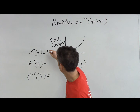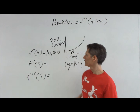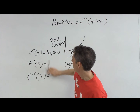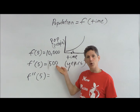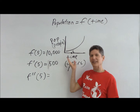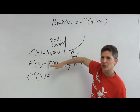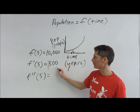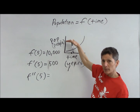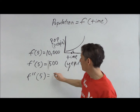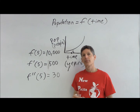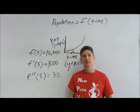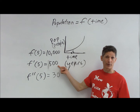At year five, the population of our town is 10,000 people. Clearly I have a positive slope, so the first derivative must be some positive value — let's say 500. So at year five, my population is growing at a rate of 500 people per year. The second derivative would also have to be positive, because that original function is concave up. Let's say 30. So at year five, the rate at which my population is growing is itself increasing by 30 people per year each year. So next year, the rate would be greater than 500.